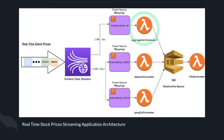The first is the aggregator consumer. This consumer is defined as an enhanced fan-out consumer, which means it gets a dedicated throughput of 2 MB per second. The responsibility of this consumer is to calculate the average price of a stock in a time window of 60 seconds. This is done by using the tumbling window in seconds parameter, which allows you to retain the state of your Lambda function between invocations in a time window of 60 seconds.